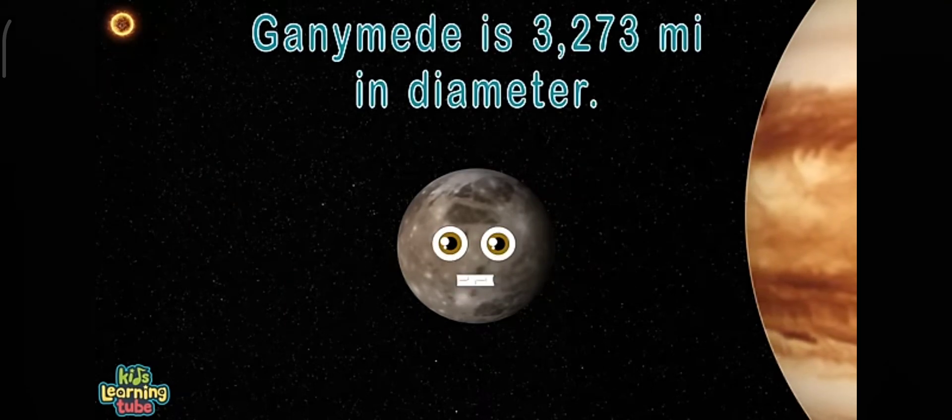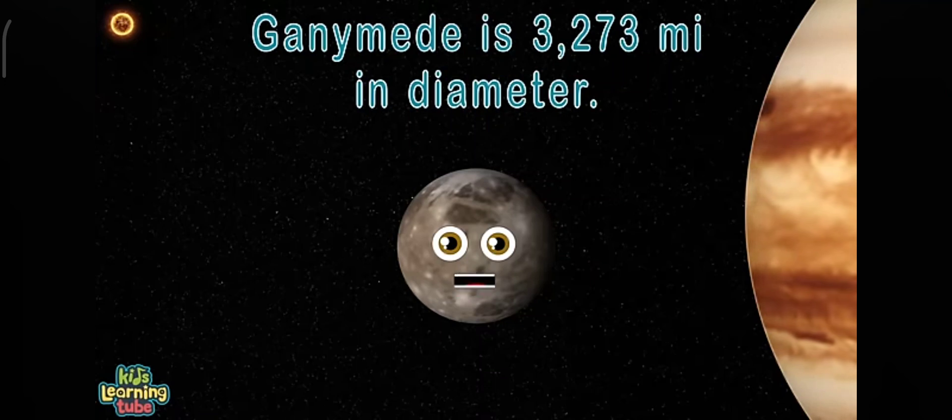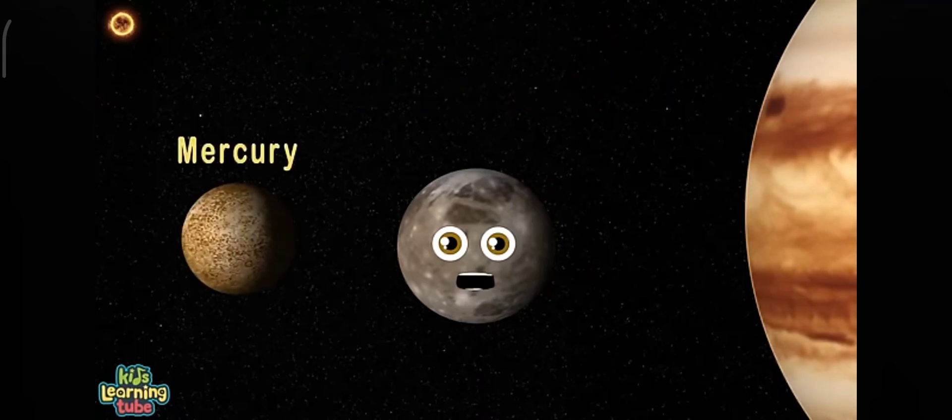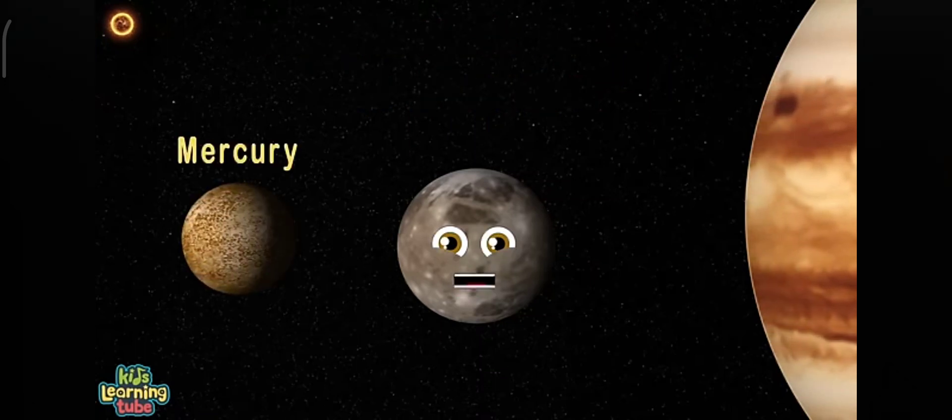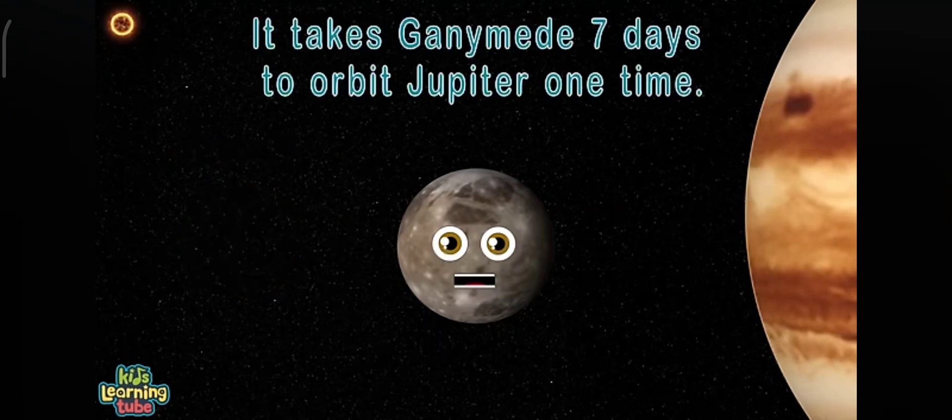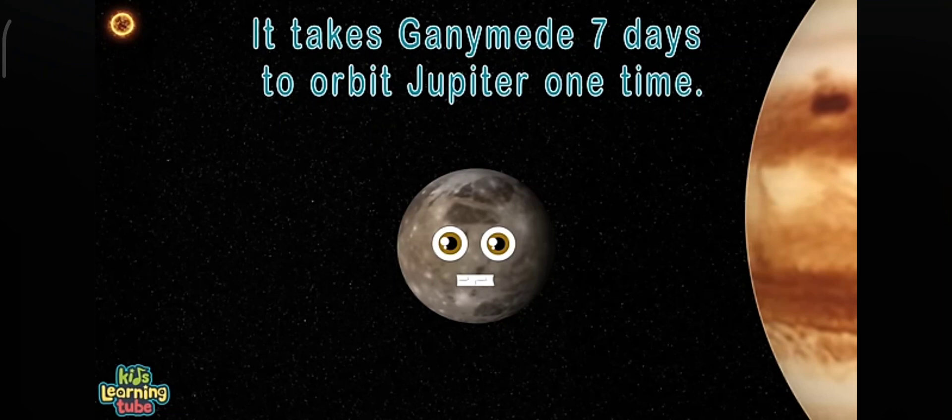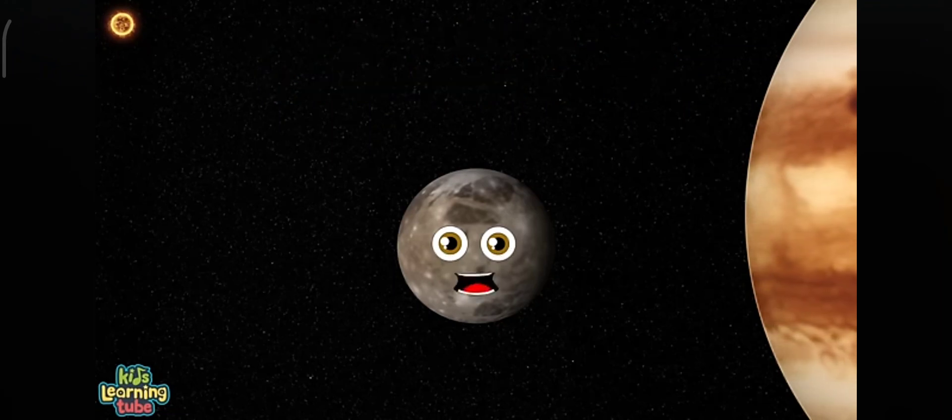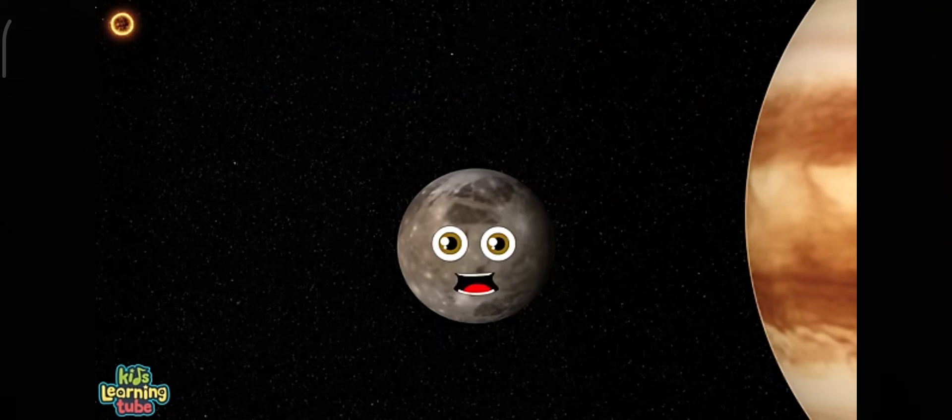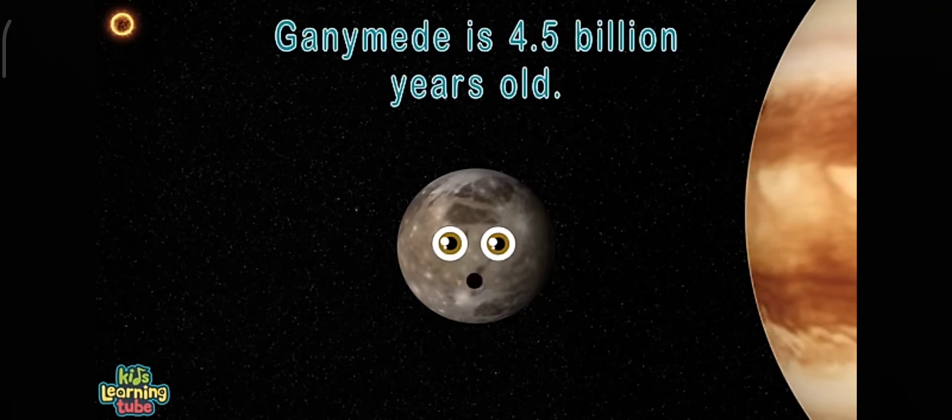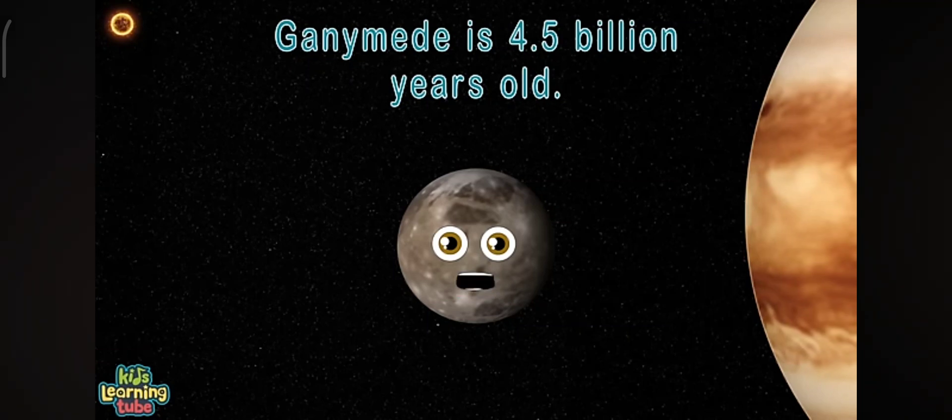My diameter is 3,273 miles. I'm 26% larger than Mercury by volume. It takes me roughly 7 days to orbit Jupiter at 665,000 miles. I'm around the same age as my planet Jupiter. I'm 4.5 billion years old. I'm very mature.